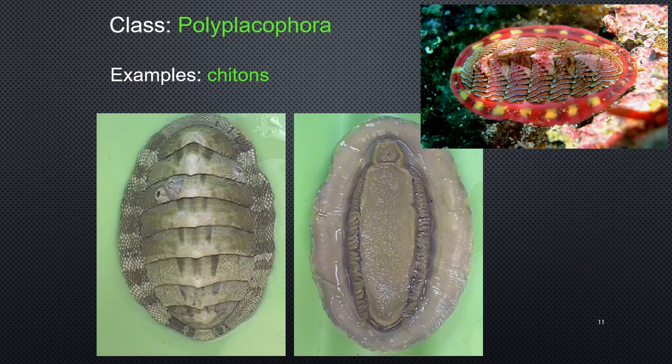We're going to start with class Polyplacophora — the word polyplaca means many plates. Our example of this are the chitons. In this image they actually have eight plates along their back, which protects them but still allows them to move. The image on the top right shows what they look like in nature — they can be very colorful. What you will see in the lab will be preserved, so it'll look a little more like the ones in the middle of the page. The next slide gives you chart features on it.